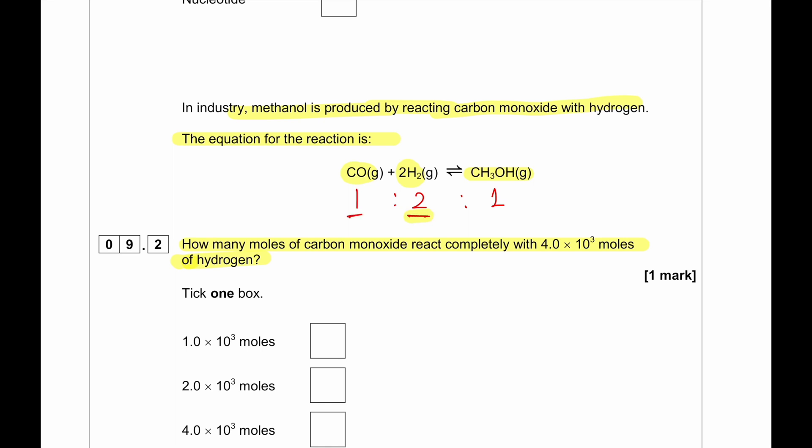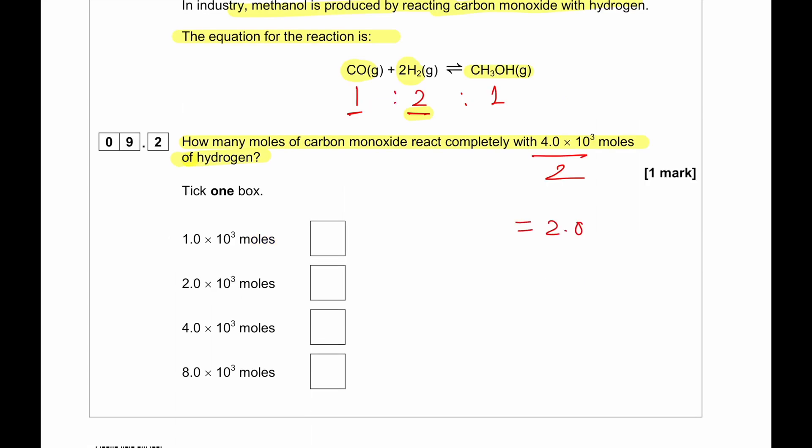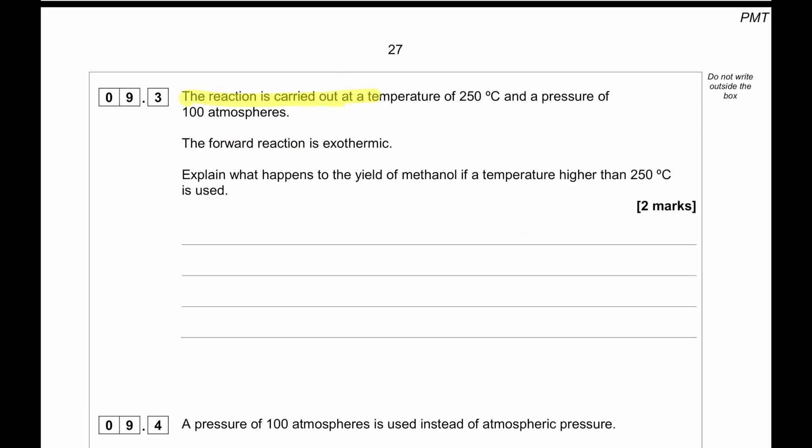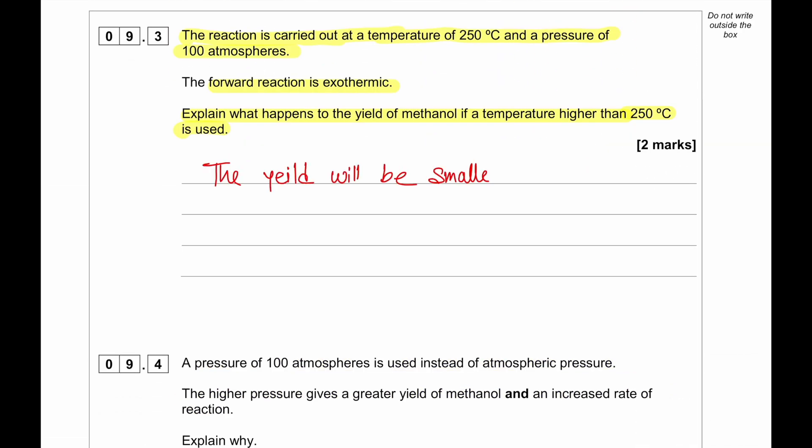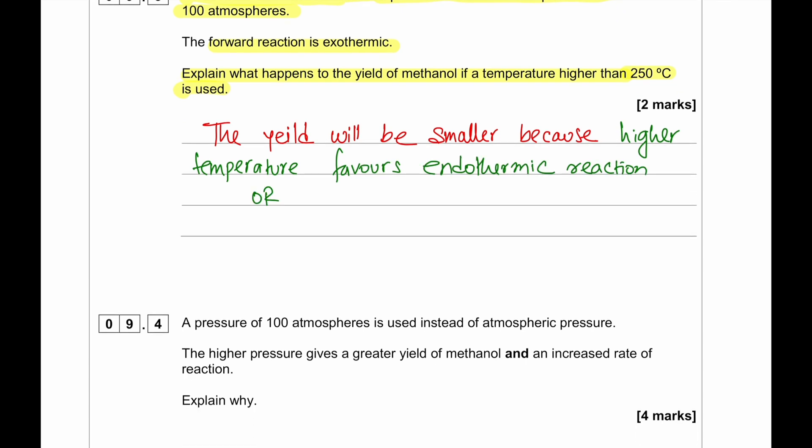The reaction is carried out at a temperature of 250 degrees Celsius and a pressure of 100 atmospheres. The forward reaction is exothermic. Explain what happens to the yields of methanol if the temperature is higher than 250 degrees Celsius. In a typical reaction where the forward reaction is exothermic, the backward reaction is endothermic. So increasing temperature decreases yield. The answer will be there will be a smaller yield because higher temperature favours endothermic reaction or reverse reaction.